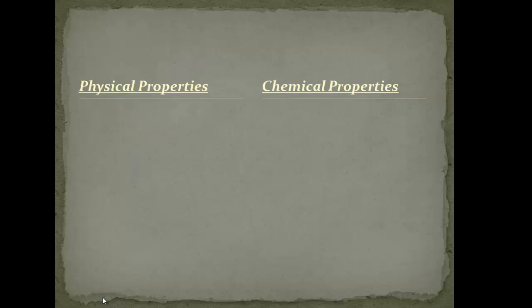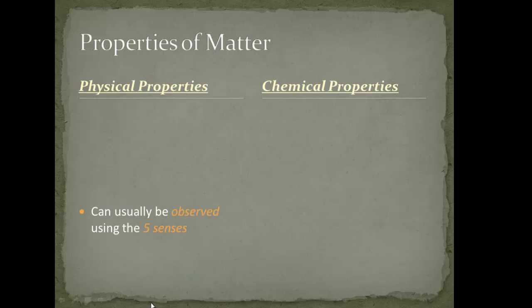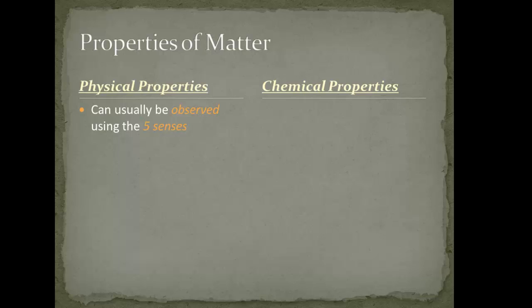Let's look at properties of matter and a side-by-side between physical properties and chemical properties to distinguish between the two. Physical properties are the ones we can observe using all five senses: sight, sound, smell, touch, and taste. We don't often taste anything in the chemistry lab, but it is one that we can use to determine physical properties of matter.